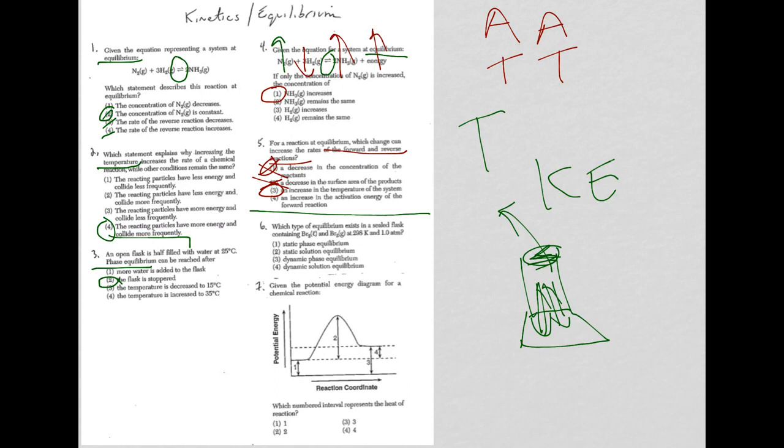And an increase in the activation energy of the forward reaction means then in choice 4, if the activation energy you need more, it's actually going to slow down the forward for a while. So that's not the answer either. The answer there is choice 3.